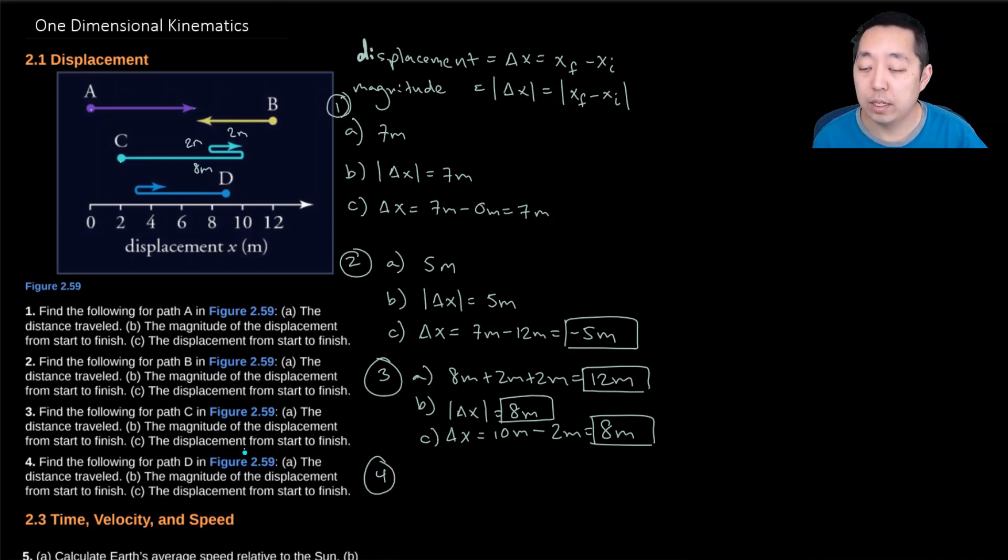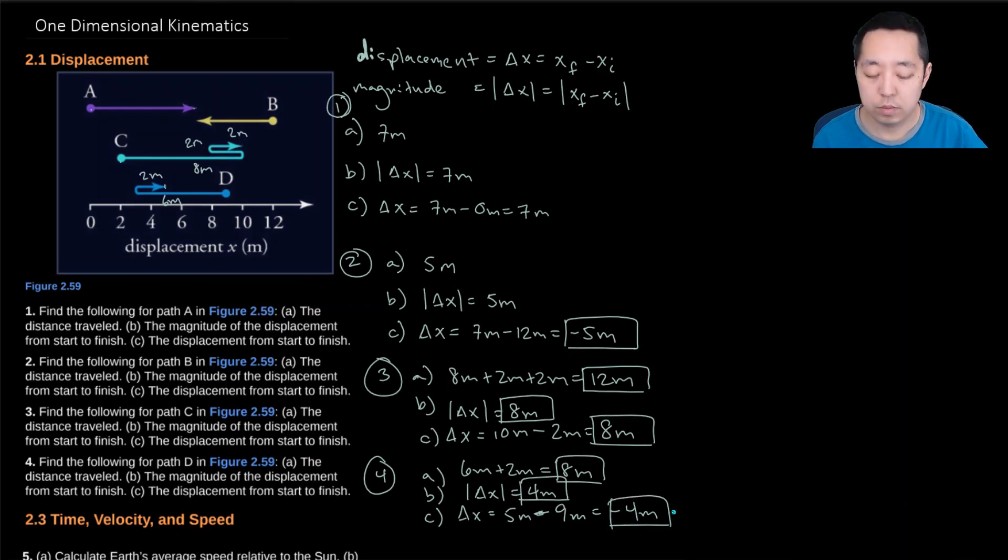So this is going to number 4. Following the path in D, we're doing the same thing. So its displacement is its final position, which is 5, because it ended right here at 5. It started at 9, minus 9 meters. So that's minus 4 meters. The magnitude of the displacement would be the absolute value of this, which is 4 meters. And then the distance traveled is, well first, it went from 9 to 3, so it did 6 meters in this direction. And then it went from 3 to 5, so it did 2 meters in this direction. So the 6 meters plus 2 meters equals 8 meters.